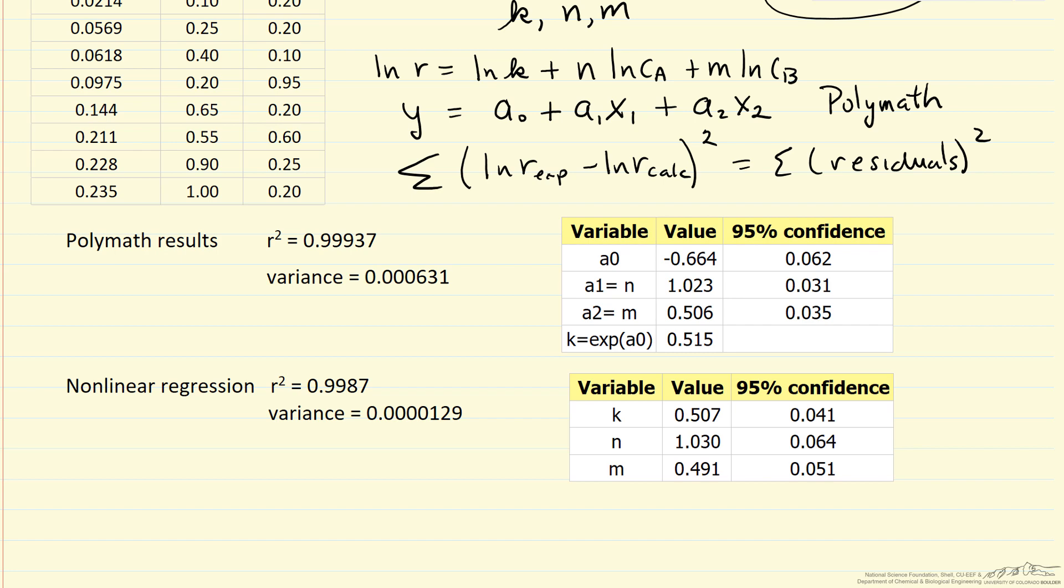The values for K, very close, likewise for N and M. The 95% confidence interval, actually larger for the nonlinear regression than for the linear regression.